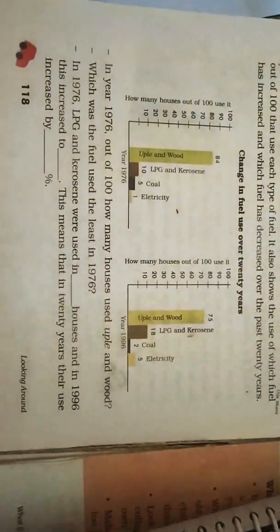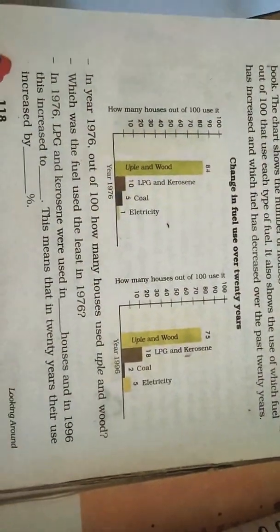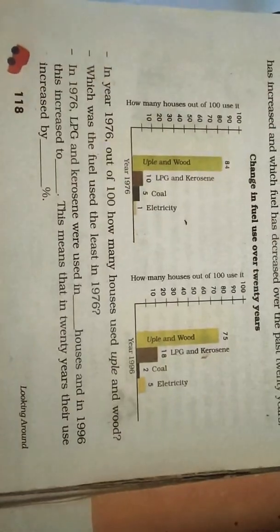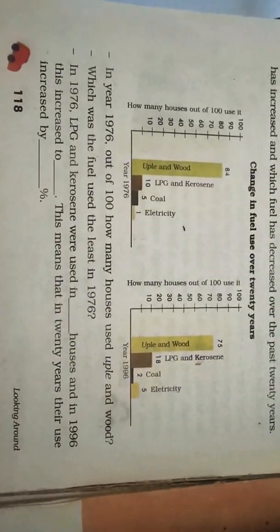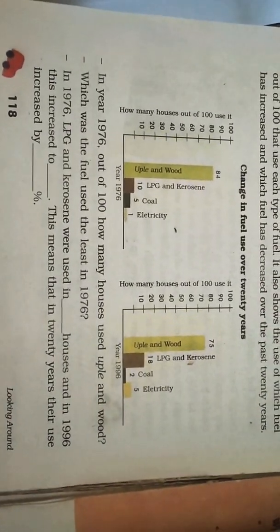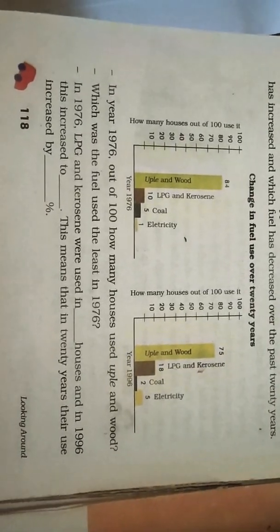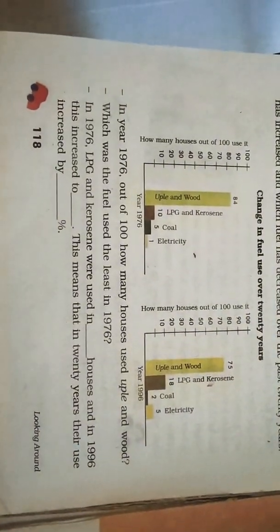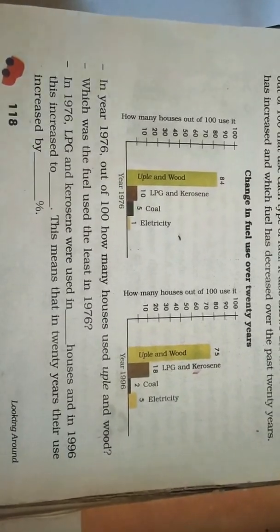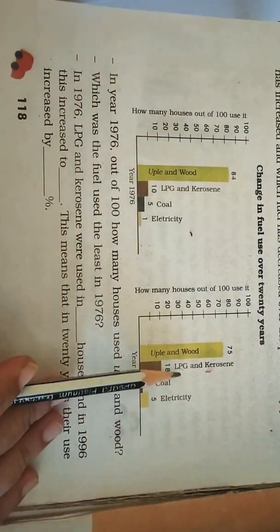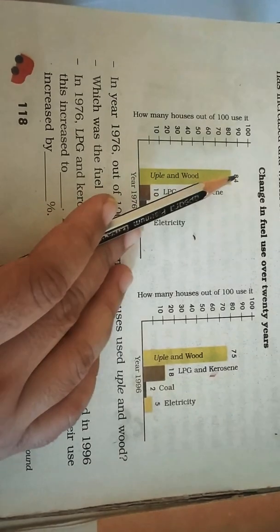Today we are going to do this question in EBS chapter. This is an important question — it can come in a five mark question and it involves a bit of mathematics, so that is why it can become a little bit confusing. In this question, two bar graphs are given.